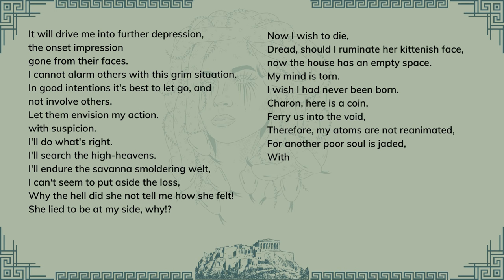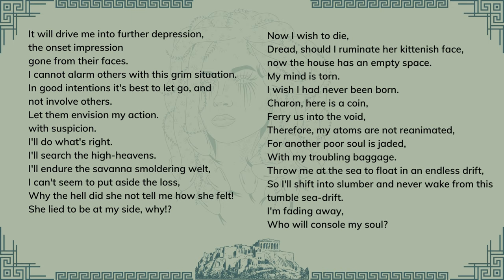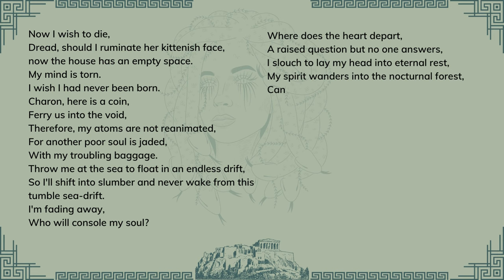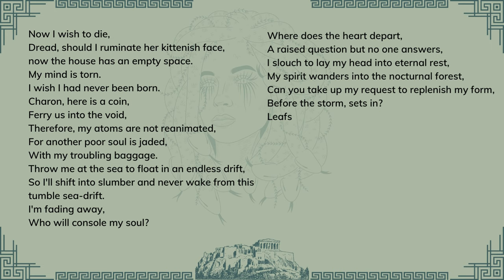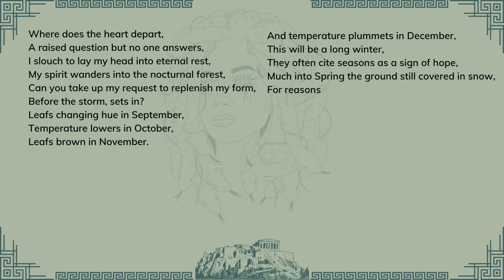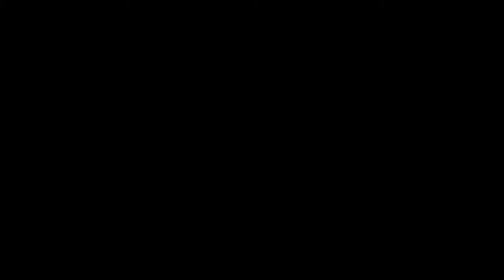Charon, here is a coin. Ferry us into the void. Therefore my atoms are not reanimated, for another poor soul is jaded with my troubling baggage. Throw me at the sea to float in an endless drift, so I'll ship into slumber and never wake from this tumble sea drift. I'm fading away. It will console my soul. What does the heart depart? I raise question but no one answers. I slouch to lay my head into eternal rest. My spirit wanders into the nocturnal forest. Can you take up my request to replenish my form before the storm sets in? Leaves changing hue in September, temperature lowest in October, leaves brown in November and temperature plummets in December. This would be a long winter. They often cite seasons as a sign of hope. Much into spring the ground still covered in snow. For reasons unknown, scientists baffled by the phenomenon. Theologians shouting Armageddon. Drifting in my blanket snowmound cover, few words humming along as the cold winter ridges on.